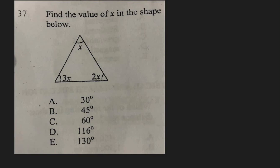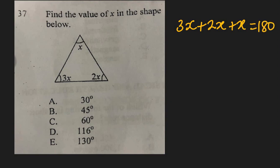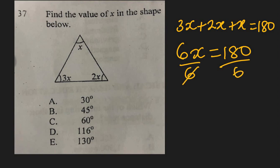Question 37: Find the value of x in a triangle with angles 3x, 2x, and x. The sum of interior angles of a triangle is 180°. So 3x + 2x + x = 6x = 180°. Divide both sides by 6: x = 30°. The right answer is A.